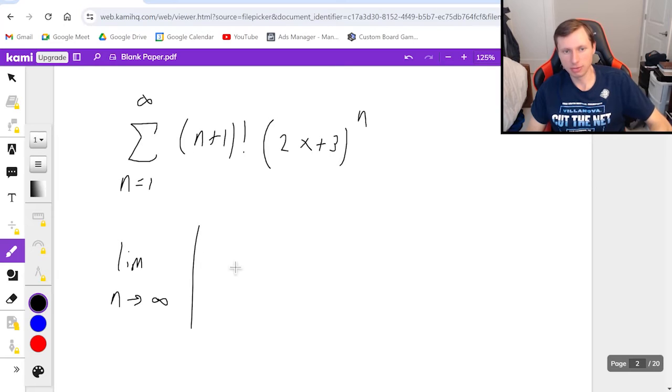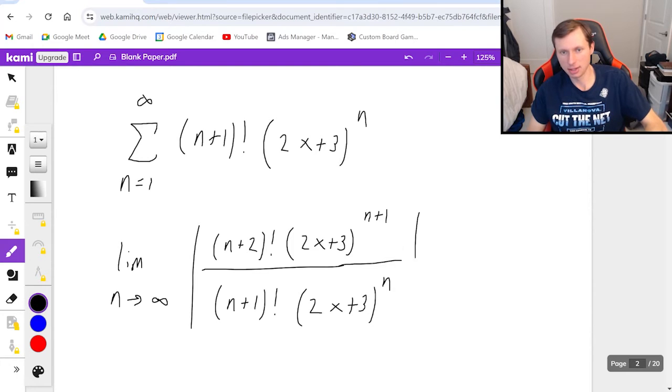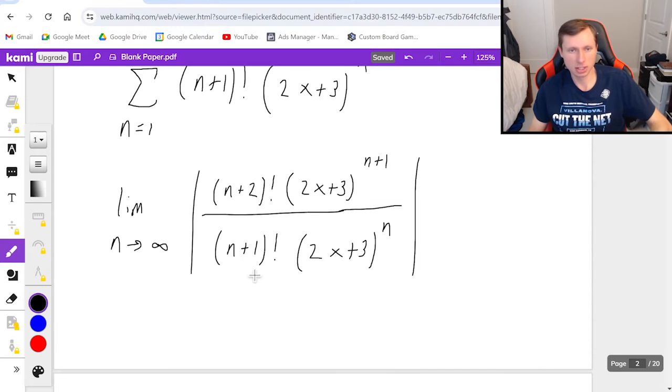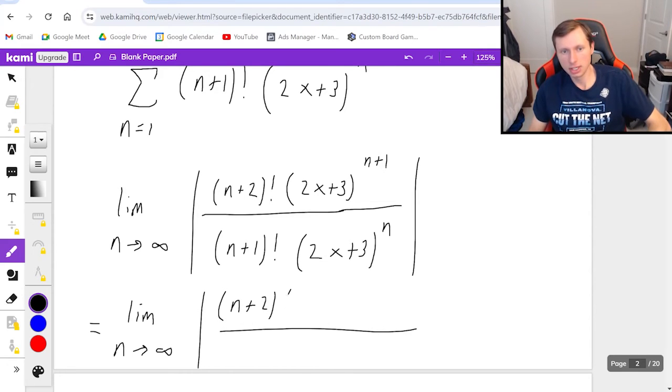Limit as n goes to infinity. Numerator is n plus two factorial now because I have to add one for the ratio test times two x plus three to the n plus one. And then that's divided by n plus one factorial times two x plus three to the nth. Close absolute value sign. So then what I do from here is reduce the numerator to get things to cancel. Numerator becomes quantity n plus two times n plus one factorial. I do not need to write it any more than that because now it just cancels with the n plus one factorial in the denominator.